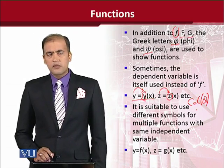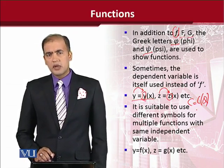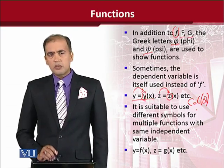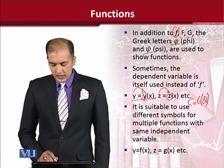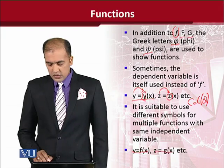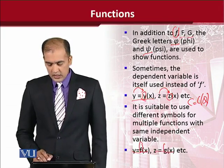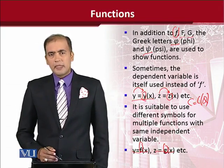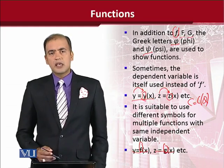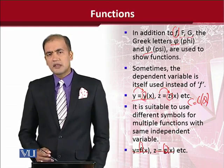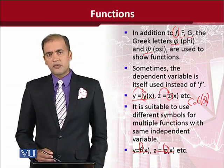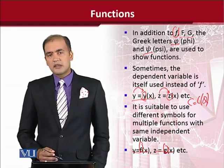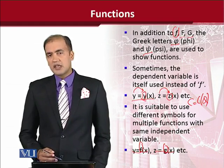At times we have more than one functions and they are depending upon the same variable. For example, we have two functions and both depend on x. To maintain differentiation between them, we do this: y is a function of x and z is also a function of x, but we use f here and g here. Because in real situation, it may be that f of x is x square and g of x is x cube. Since their formation is different, their equation is also different. It is better that we use different symbols for representing a function.